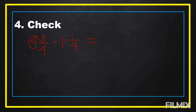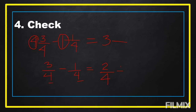We're going to subtract the whole numbers first: four minus one equals three. Then three-fourths minus one-fourth — these are similar fractions because the denominators are the same. We just subtract the numerators: three minus one equals two, over four. Reducing two-fourths: two and four are both divisible by two. Two divided by two equals one, four divided by two equals two. Our answer is three and one-half, which is the kilogram amount for chicken. So we got the correct answer: four and three-fourths.